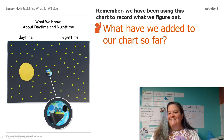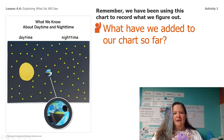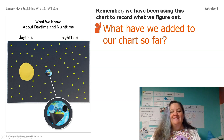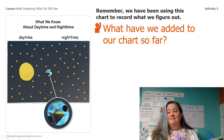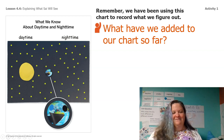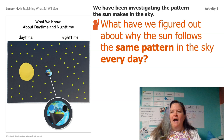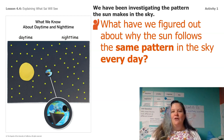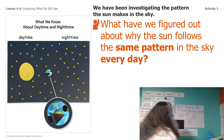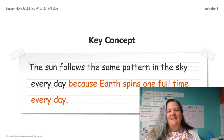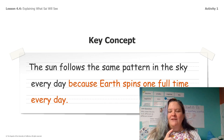Did somebody point to the sun? How about the stars? That arrow is saying that the earth spins. Does anybody remember what the dots mean? The blue dot tells us it's day, and the black dot tells us that in that part of the earth it's nighttime. So what have we figured out? The sun follows the same pattern in the sky every day because the earth spins one full time every day.